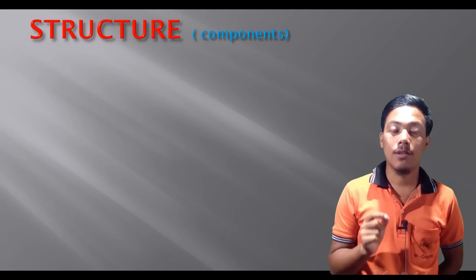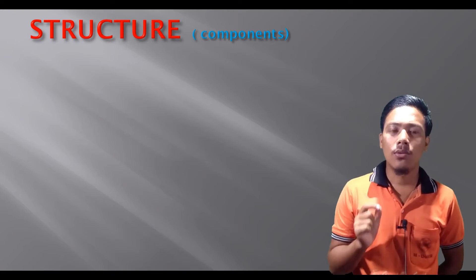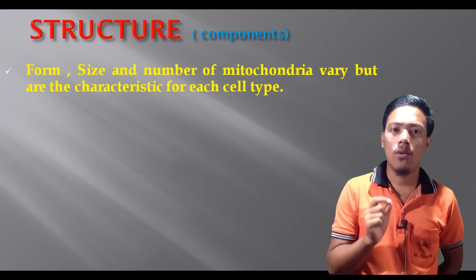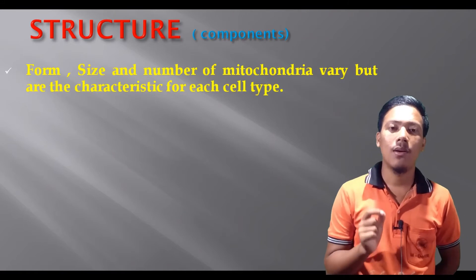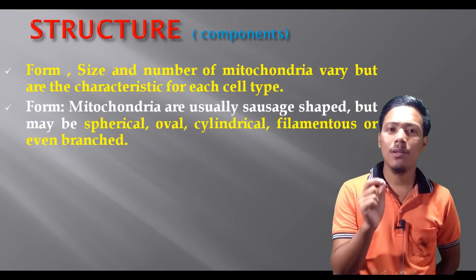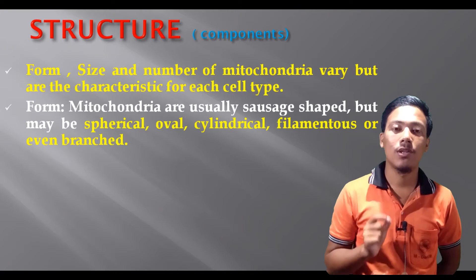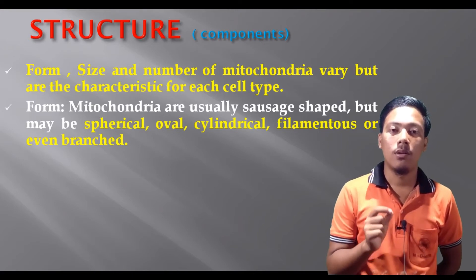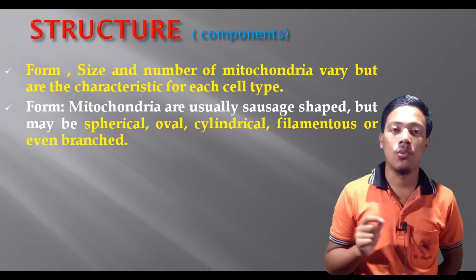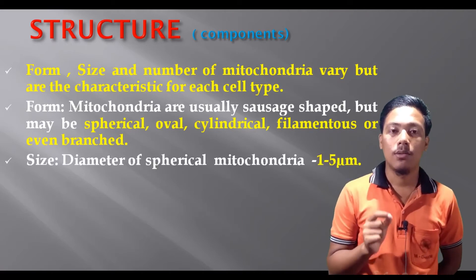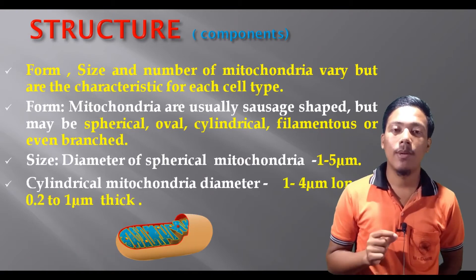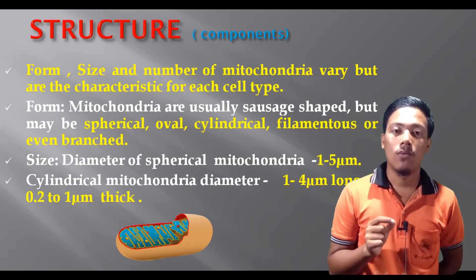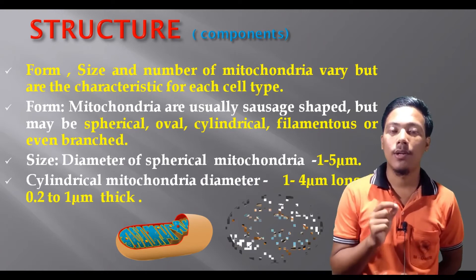Mitochondria vary in form, size, and number. They can be cylindrical shape, spherical shape, oval shape, or even branch shape.